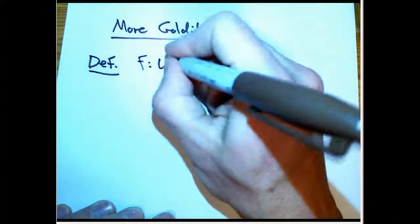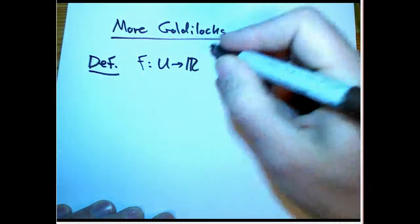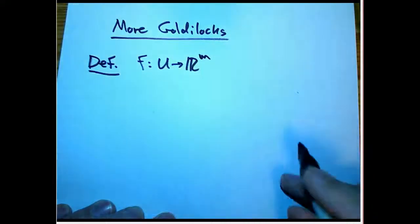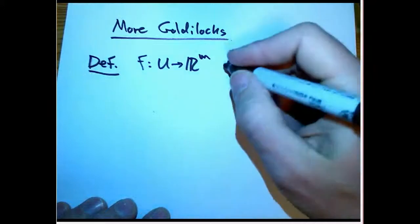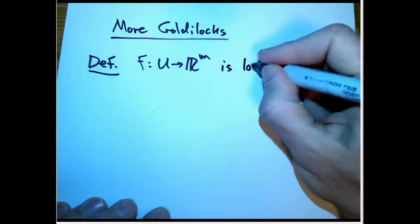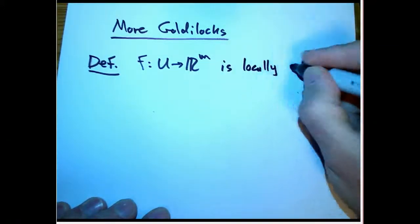So again, we've got F: U to R^m. It doesn't really matter. We're not being super careful about the dimensions here. We're going to say it's locally one-to-one if, the usual thing, for every x in U, there is a neighborhood,